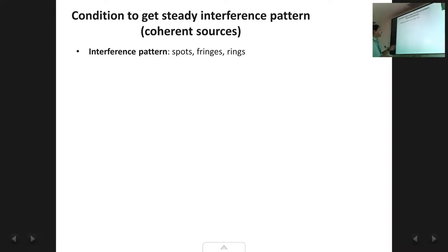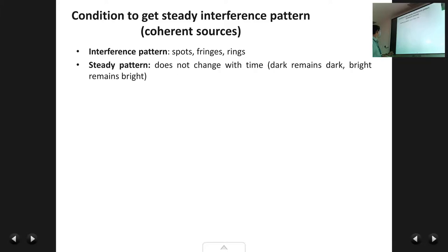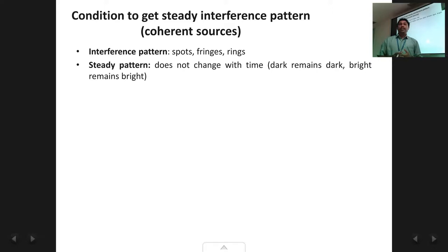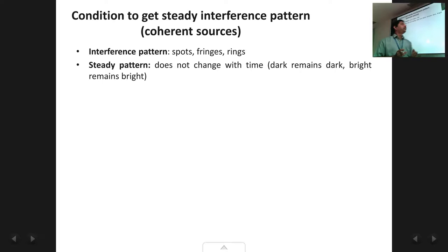An interference pattern is steady if the pattern does not change with time. This means if a point is bright at one instant, when you come back and observe the same point again it should still remain bright. A dark spot or dark circle also remains dark throughout — it doesn't change with time. So a pattern is said to be steady if dark remains dark and bright remains bright.